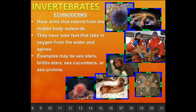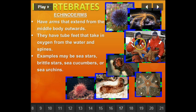Echinoderms have arms that extend from the middle of the body outward. They are amazing looking with great color. They have tube feet that take in oxygen from the water, and spines. Examples include sea stars — often called starfish, but correctly called sea stars — brittle stars, sea cucumbers, and sea urchins.